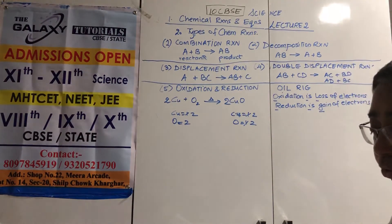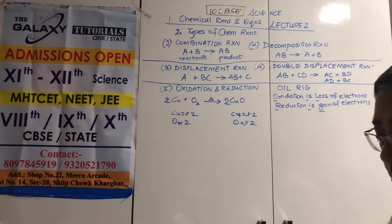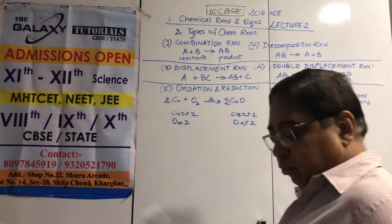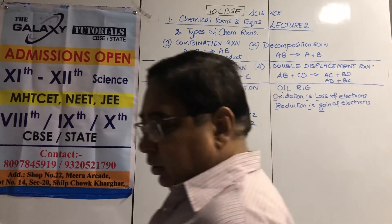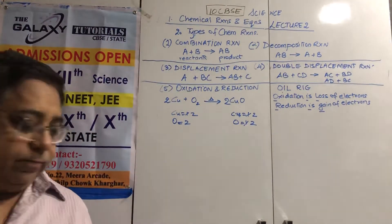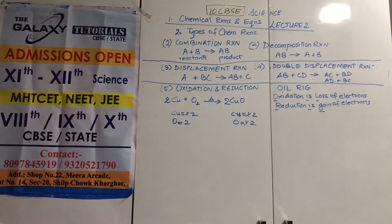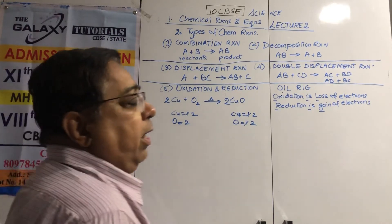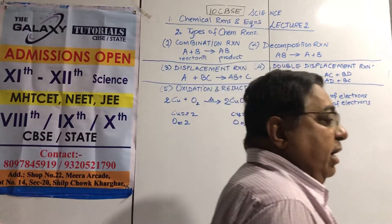In this reaction, copper is getting oxidized. Metals normally give electrons; non-metals normally take electrons, because metals are positive and non-metals are negative. Oxidation involves loss of electrons; reduction involves gain of electrons.